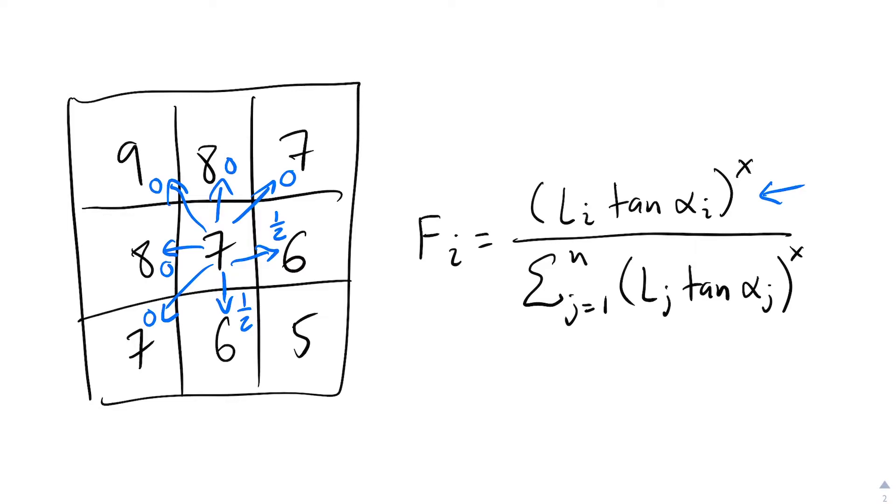Now, for the neighbor with an elevation of 5, we know that Li is the square root of 2 divided by 4, and the tangent of alpha i is the square root of 2. So, the result is also 1 half before normalization.